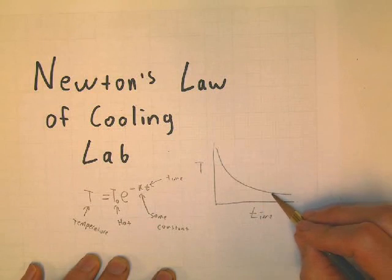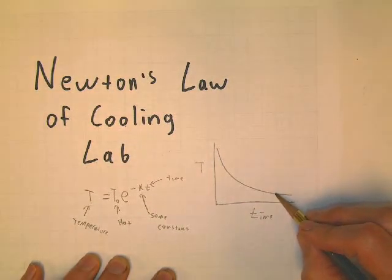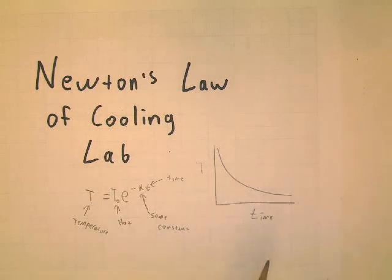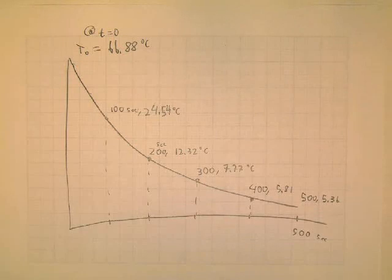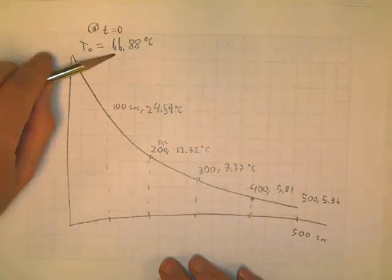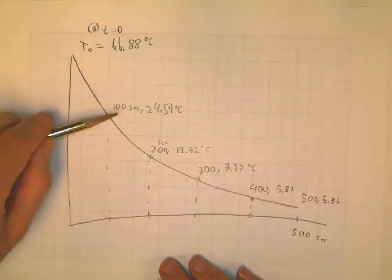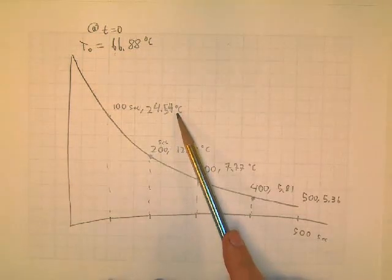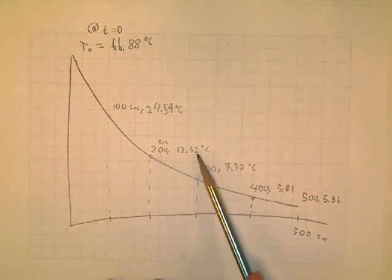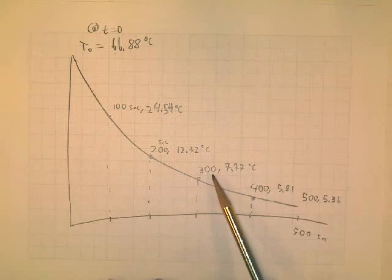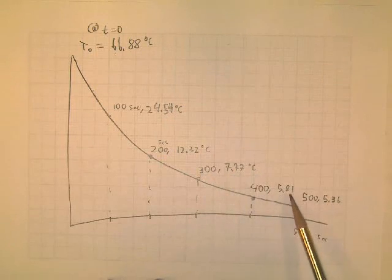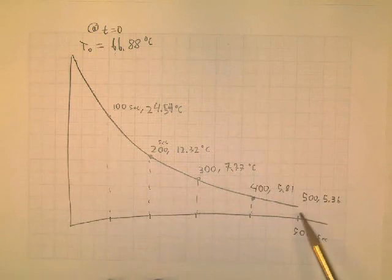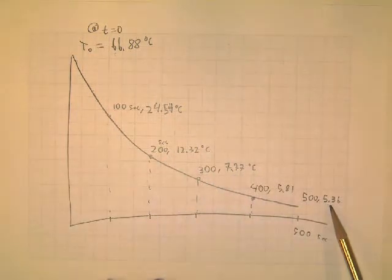So we did the graph, and the data file is in the Excel spreadsheet data in this same folder. We did the lab, and we got that the original temperature is 66.88 degrees Celsius at time zero. At 100 seconds, it was 24.54 degrees Celsius. At 200 seconds, it was 12.32 degrees Celsius. At 300 seconds, it was 7.77 degrees Celsius. At 400 seconds, it was 5.81 degrees Celsius. And at 500 seconds, it was 5.36 degrees Celsius. So these are both degrees Celsius. And all of these times are in seconds. And we think that our temperature is plus or minus .1 degrees Celsius. We think our time is probably plus or minus .001 seconds.